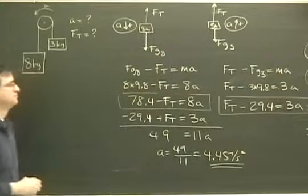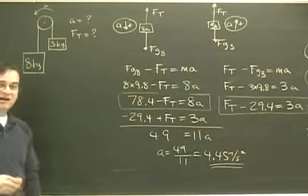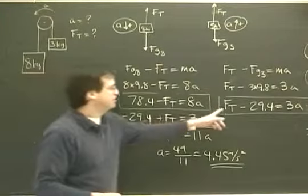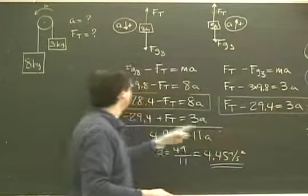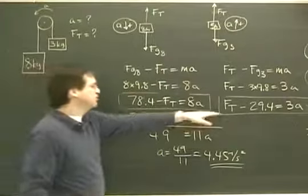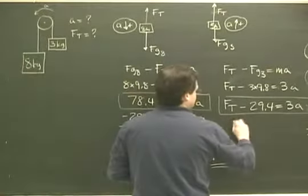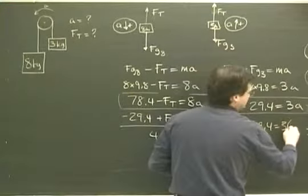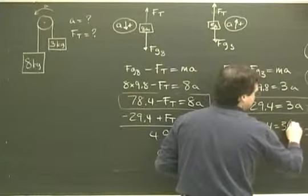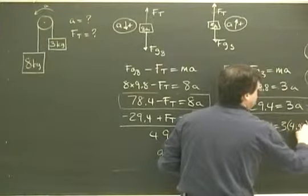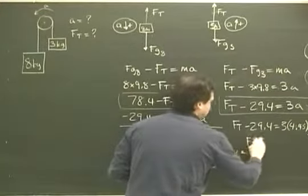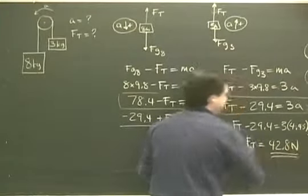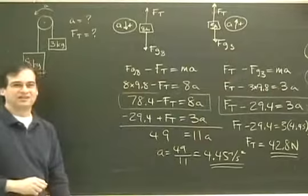Now what I want to do is find the tension. To find the tension, I can solve for using this formula because I have the acceleration or this formula. So I'm going to use this one over here. The tension minus 29.4 equals 3 times the acceleration which was 4.45 and so the tension is equal to 42.8 newtons. And that's it.